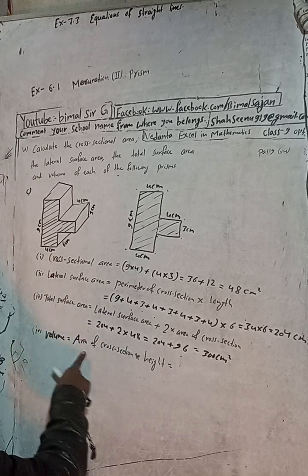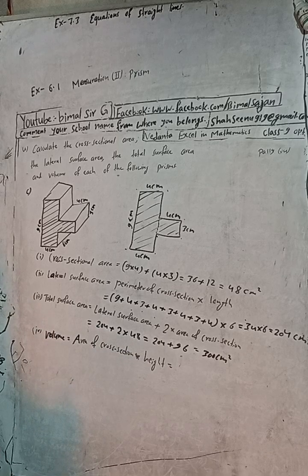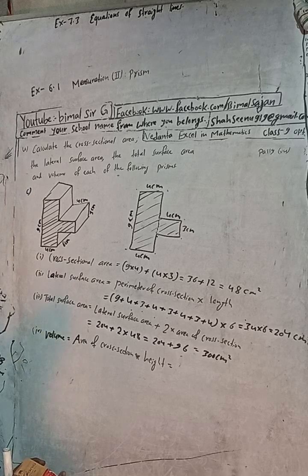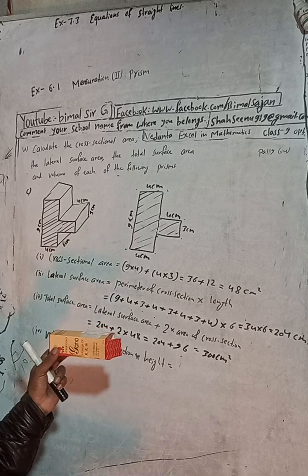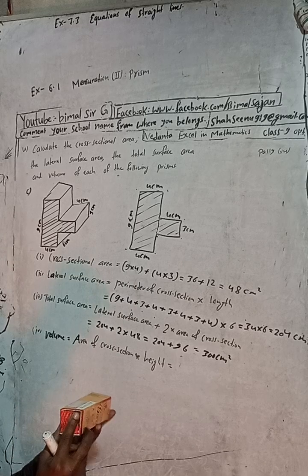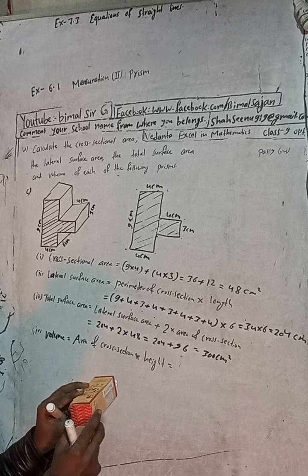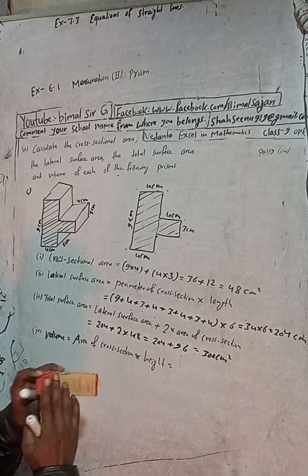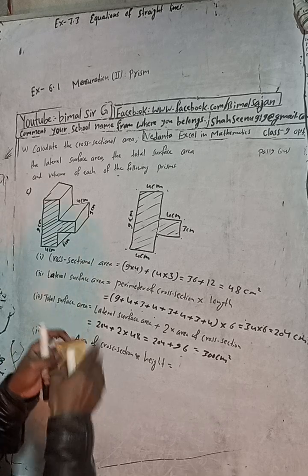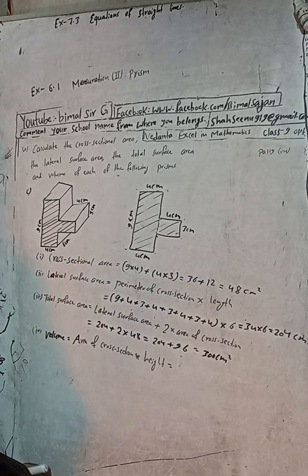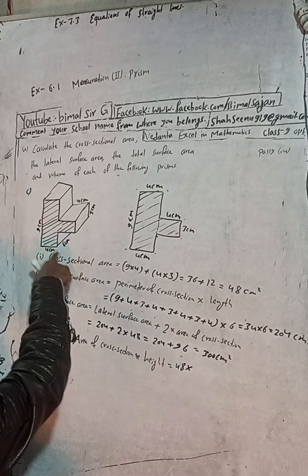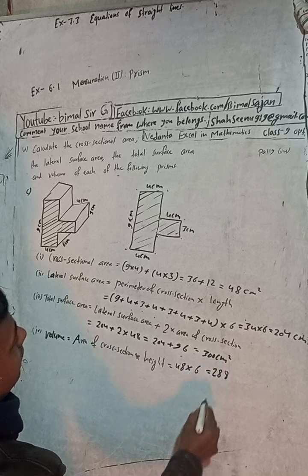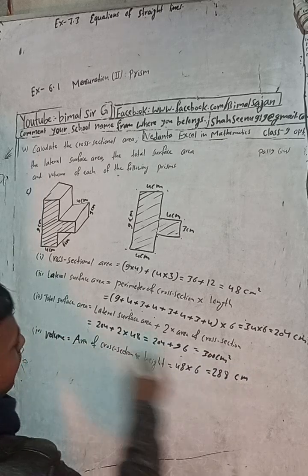Now for the volume. Volume formula is: area of cross-section into height (length). The area of cross-section is 48 and the height (thickness) is 6 cm. So volume = 48 × 6: 6 × 8 = 48, carry 4; 6 × 4 = 24 + 4 = 28. Volume = 288 cm³. The volume unit is cube (cm³). This is the correct answer.